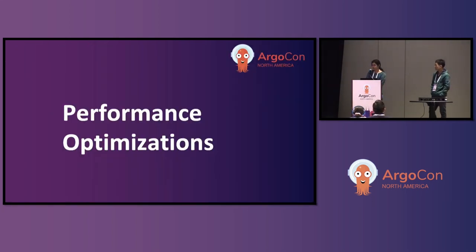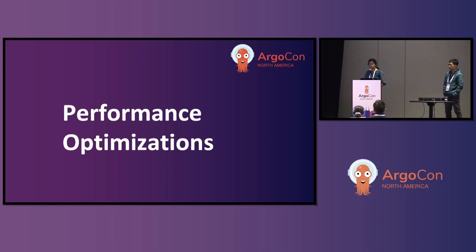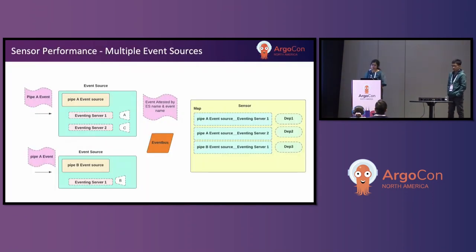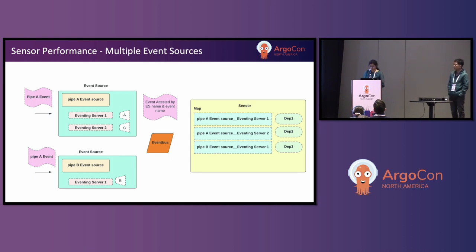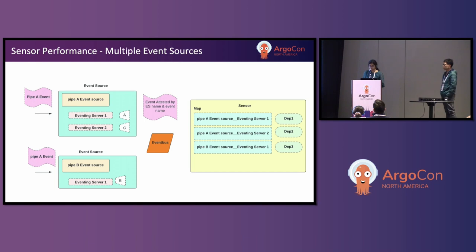I hope we now have a good understanding of our design. I'll now discuss two significant enhancements that we did to achieve high performance. Our objective was to support a high scale of 15,000 pipelines and approximately 25,000 dependencies. So let me talk about the first optimization. Initially, we had one event source per pipeline — let's say event source A and event source B. Event source A has two eventing servers, server 1 and server 2, and event source B has an eventing server filtering events for pipeline B. We had the filter at the event source level.